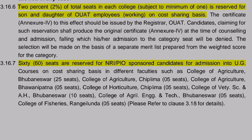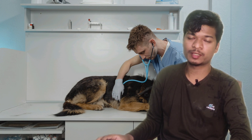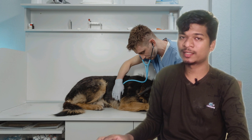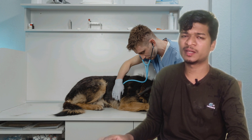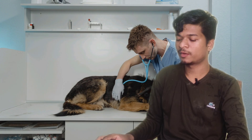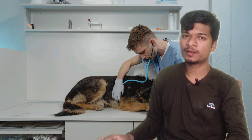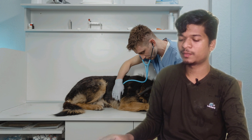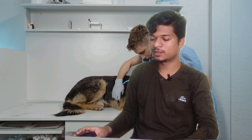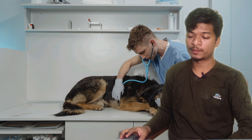Two percent of seats in each college are reserved for sons and daughters of OUAT employees working on a cost-sharing basis. If your parents are working in OUAT, you can take admission without competition. Regarding NRI seats: non-resident Indian seats are a bit costly compared to free seats and general seats, but many students take admission through this route. There are a total of 60 NRI seats; for College of Veterinary Science and AH, 10 seats are reserved. To apply under NRI, you need to produce a PCR or approved permanent resident certificate and the passport of the sponsor — that is, parents or a relative — valid till the last date of admission.